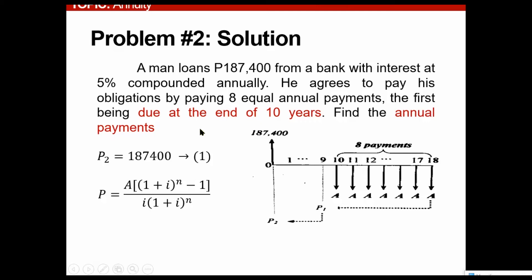So how can we do that? So two-step solution, the first step is actually to consider that P2 or our present worth 2 is actually $187,400 initially. Now, the main concept, as you can see, is just to point all of our money in one reference time.